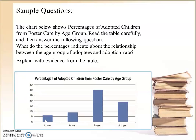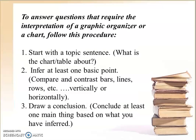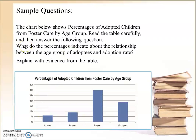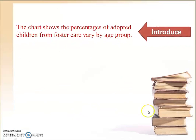Here is a sample question from the official exams. We have a chart that shows the percentages of adopted children from foster care by age group. Read the table carefully and answer the following question. Whatever the question is, we have to follow the three steps — whether they ask us to compare, read, conclude, or infer, the answer should be a paragraph including all three steps.